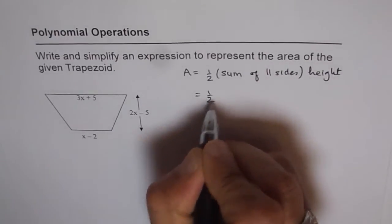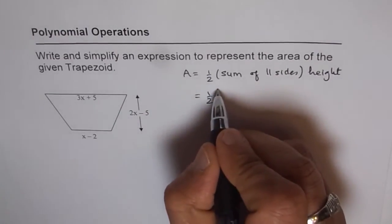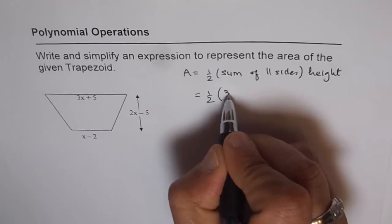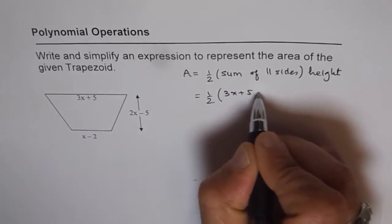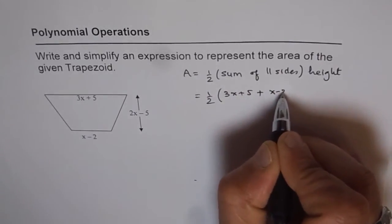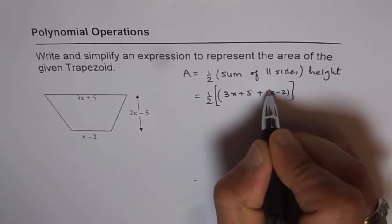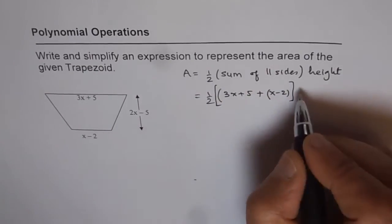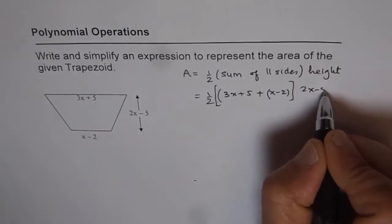So, it is half of the sum of the sides, which is 3x plus 5 plus x minus 2, that is the sum of the sides, and times height. Height is 2x minus 5.